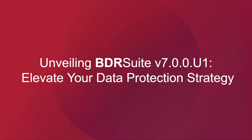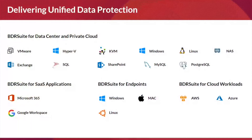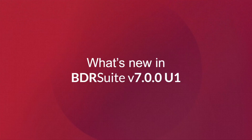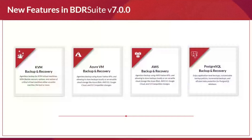Users on lower versions of BDR Suite can update to the latest version 7.0 U1 from their portal account downloads. The new features in version 7.0 include KVM backup and recovery, Azure VM backup, AWS backup and recovery, and PostgreSQL backup and recovery. KVM backup is a VM-level, agentless backup — you don't need to install agents on each VM.